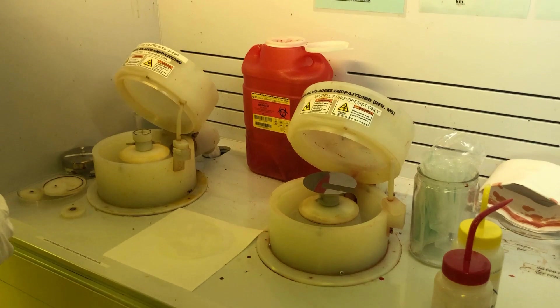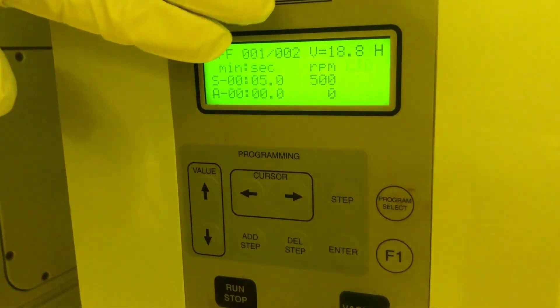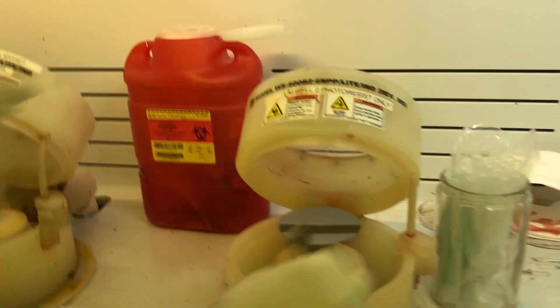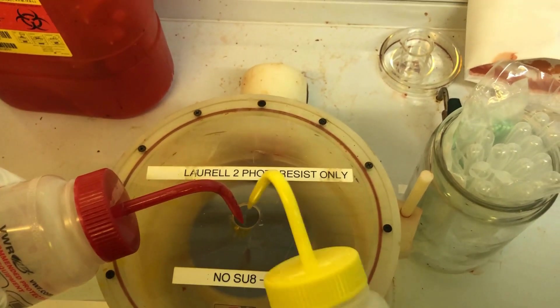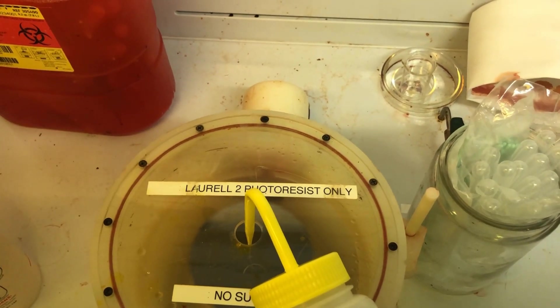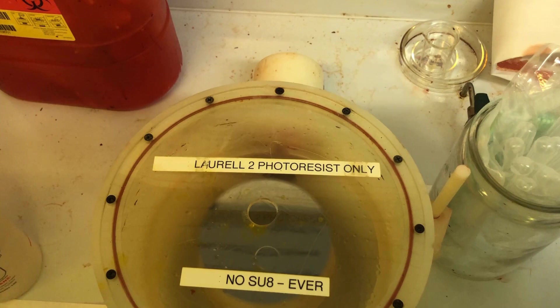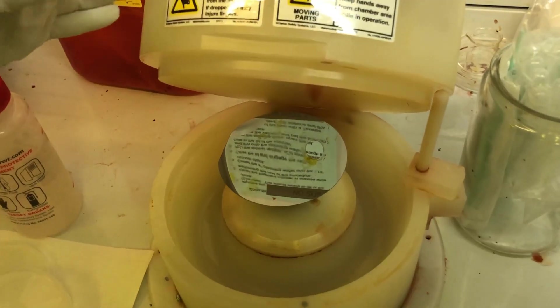First, center your substrate onto the chuck. Then apply the vacuum by turning on the switch. Verify that your vacuum reading is showing up here on the top right-hand corner. If not, depress the vacuum switch until it does. Close the lid and start your run. First, deposit acetone followed by IPA. Allow the spinner to finish spinning. Always open the lid slowly so that no residue deposits onto your substrate. Turn off the vacuum.